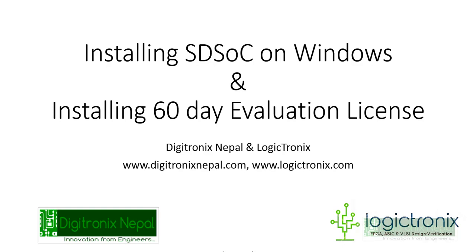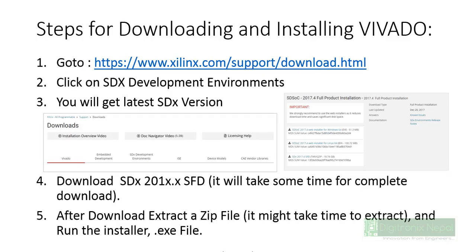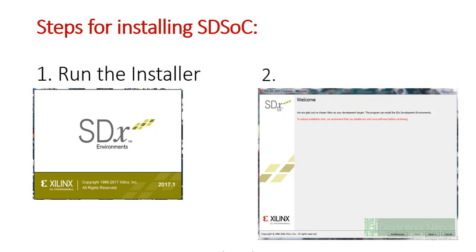In this section on installing SDSoC on Windows and getting a 60-day evaluation license, we have presented all the necessary steps. First, go to the Xilinx website and download the SDx development environment for Windows, or get the SDx version for all operating systems. After downloading, extract the zip file — extraction takes a little time — and inside the extracted folder you will find the installer, which is a .exe file. Run that .exe file and you will get the installer running on your desktop.